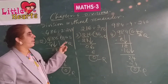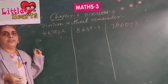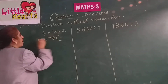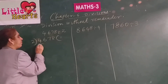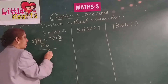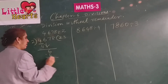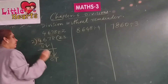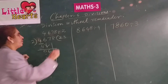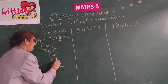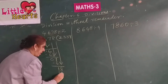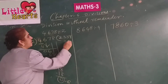Division of a 4-digit number by a single-digit number without remainder. Take 4678 divided by 2. When a 4-digit number is there, start dividing from the thousands place. Consider 4: 2 twos are 4. Bring down 6: 2 threes are 6; 6 minus 6 is 0. Bring down 7; 2 threes are 6; 7 minus 6 is 1. Bring down 8 to get 18: 2 nines are 18. The quotient is 2339 and the remainder is 0.